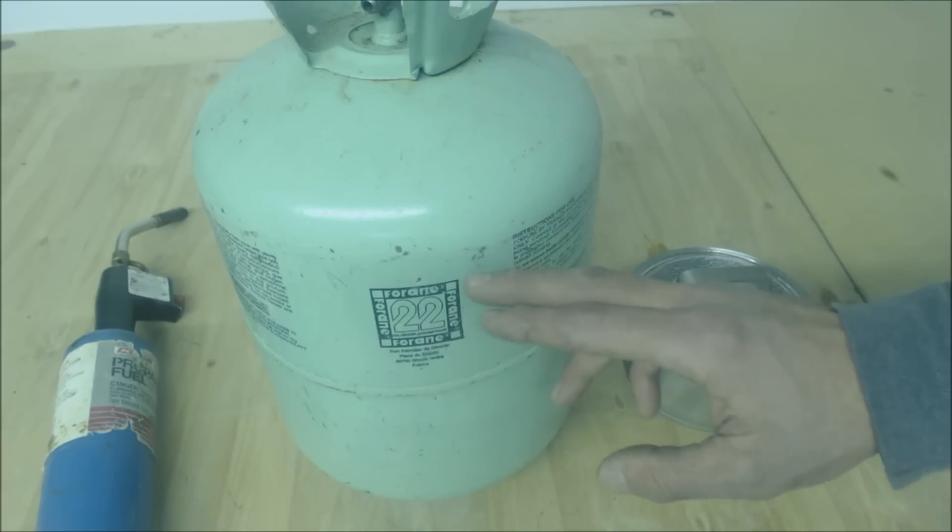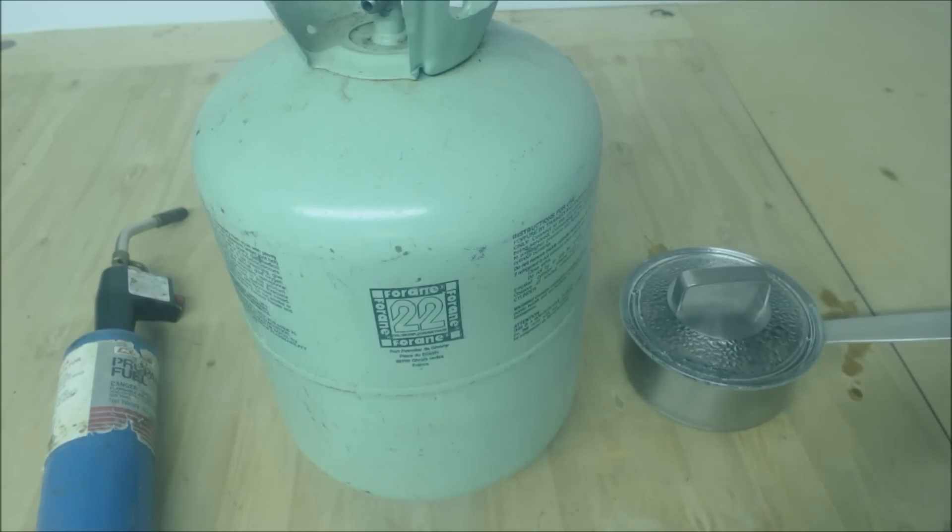All right, so we're going to use this as an example here. R22 can be a complete liquid and no vapor at negative 41 degrees roughly. At negative 41 degrees there is no pressure being applied at sea level.